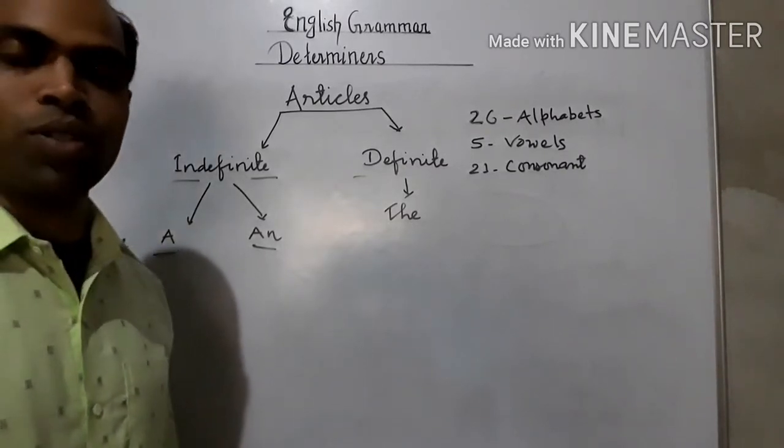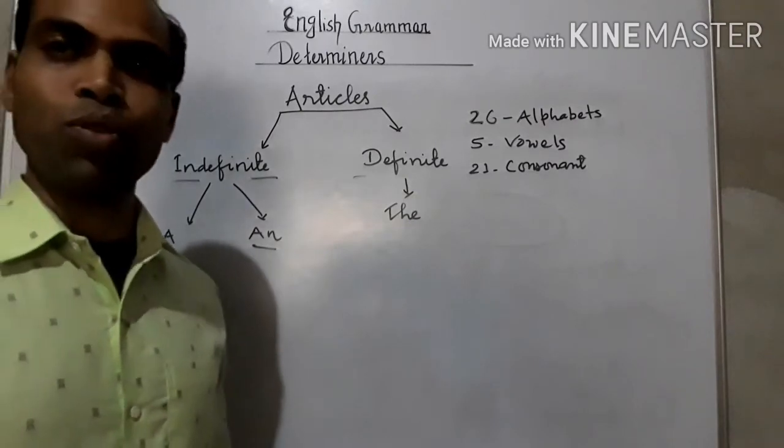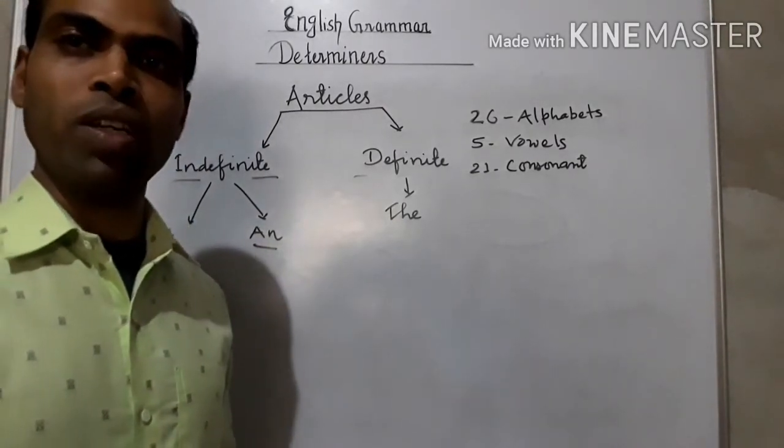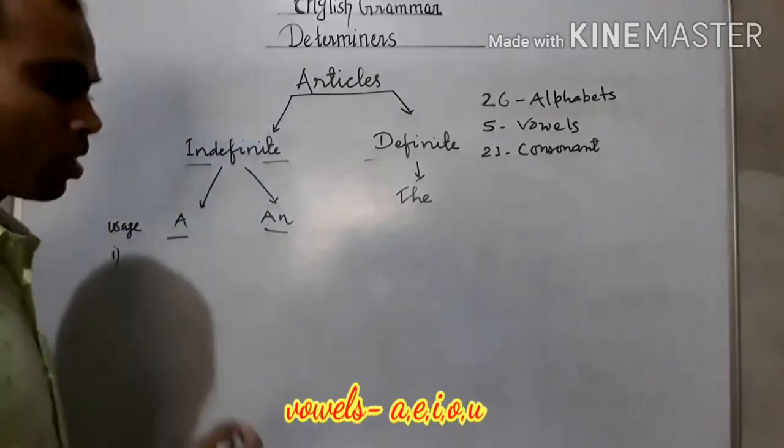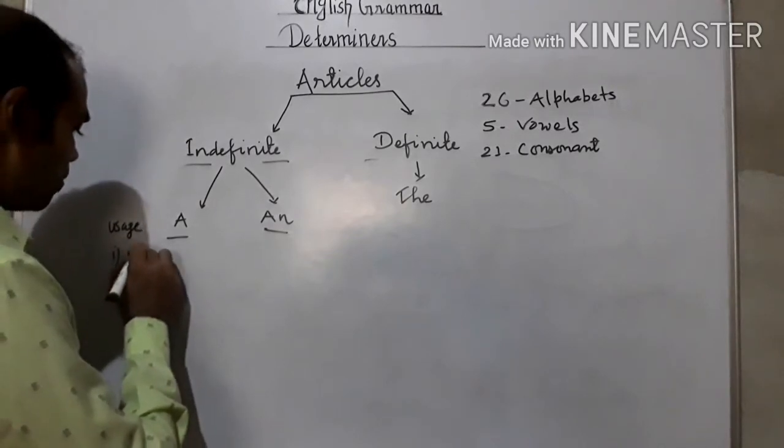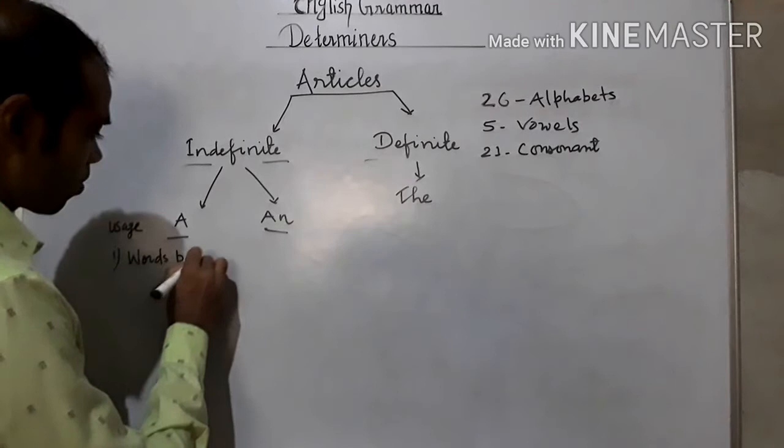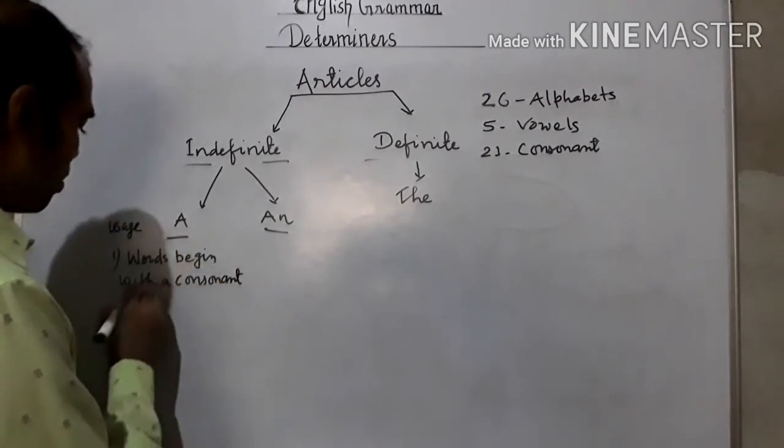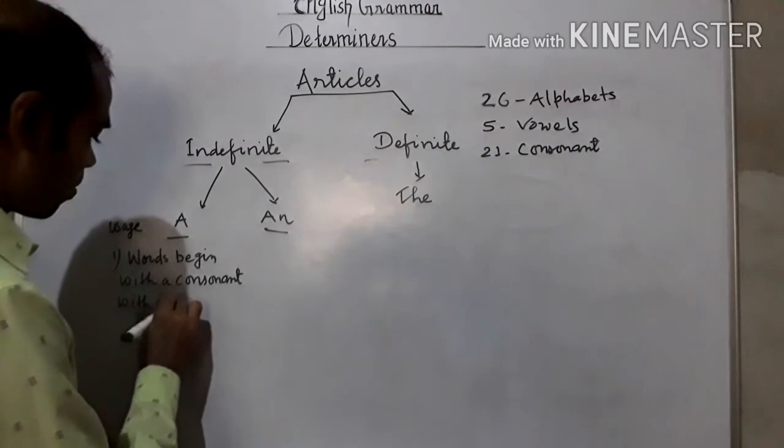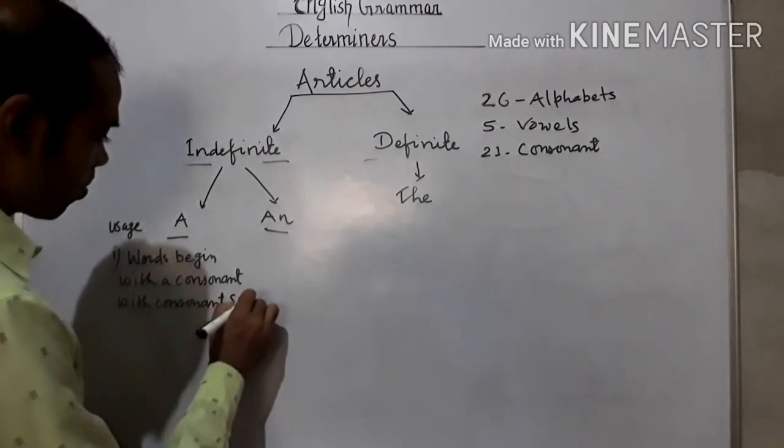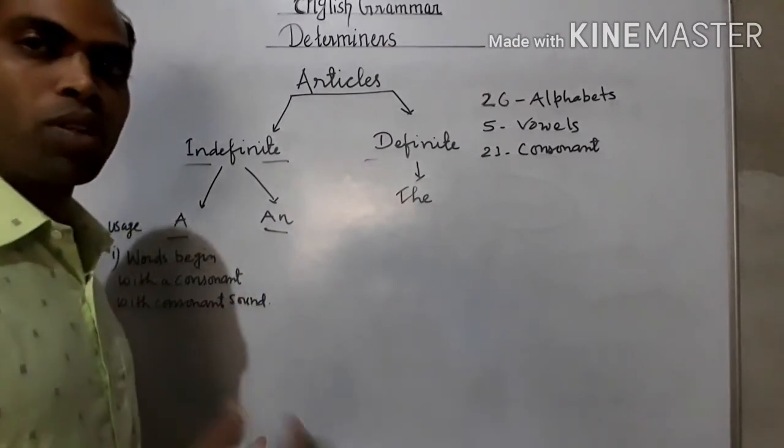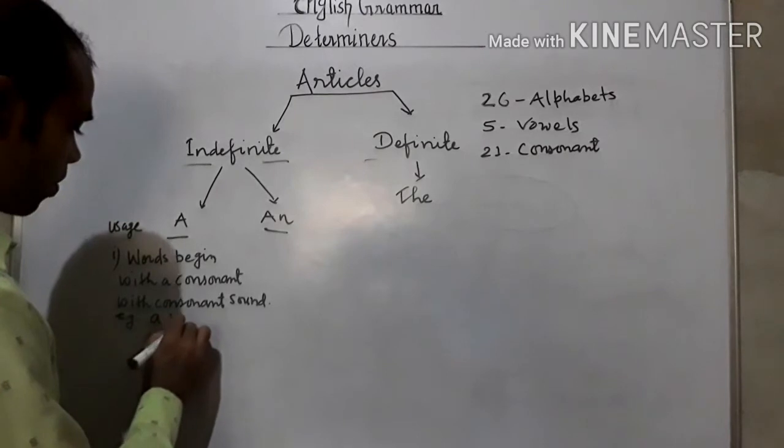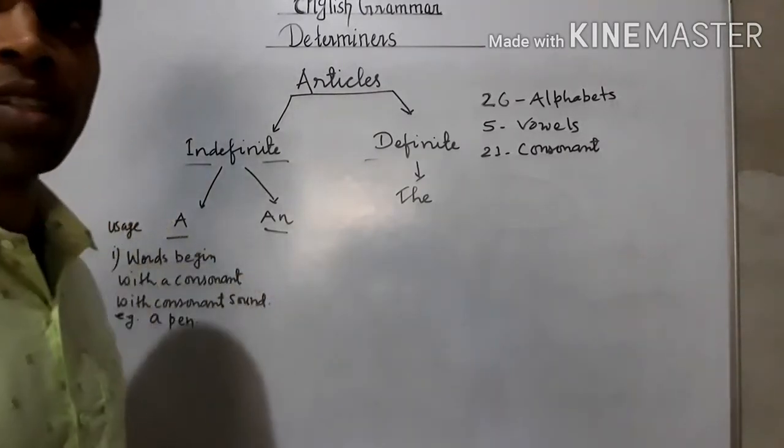Generally A is used where words begin with consonants or consonant sounds. If the vowel is also used as a consonant, then we will use A. The first usage is words begin with a consonant sound. For example: a pen. P is a consonant. Pen's first letter is P, which is a consonant.